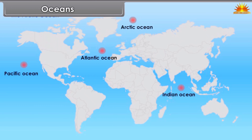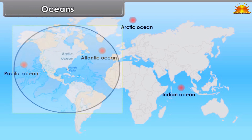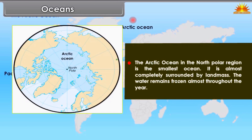The Arctic Ocean in the North Polar region is the smallest ocean. It is almost completely surrounded by land mass, and the water remains frozen almost throughout the year.